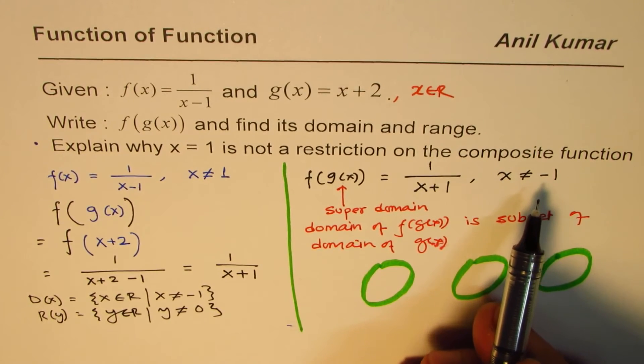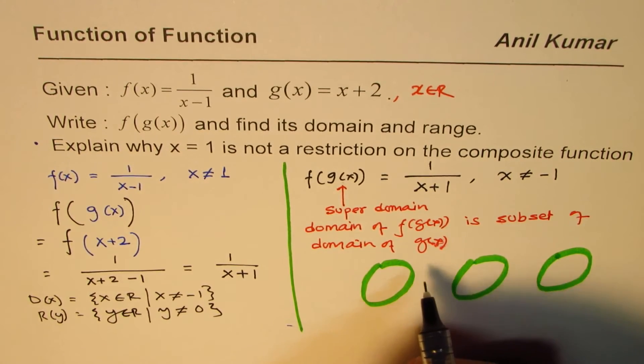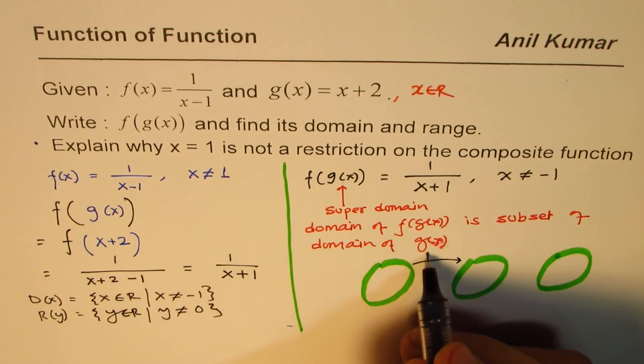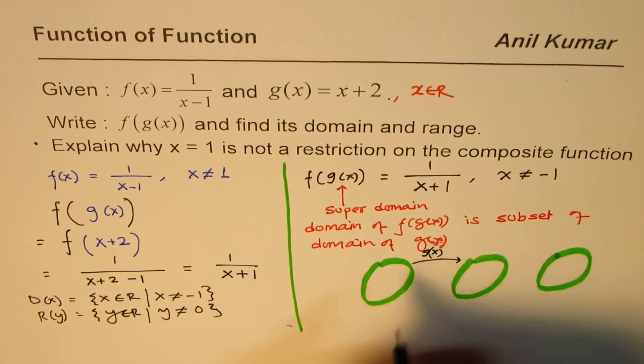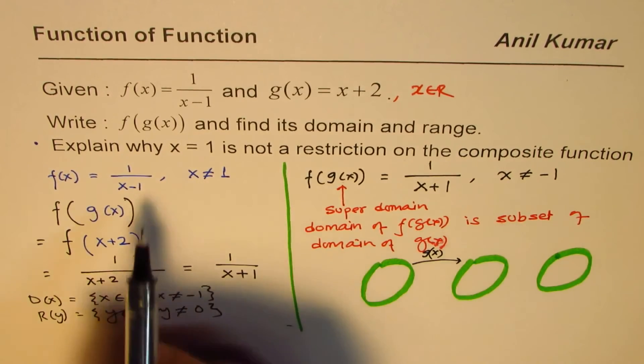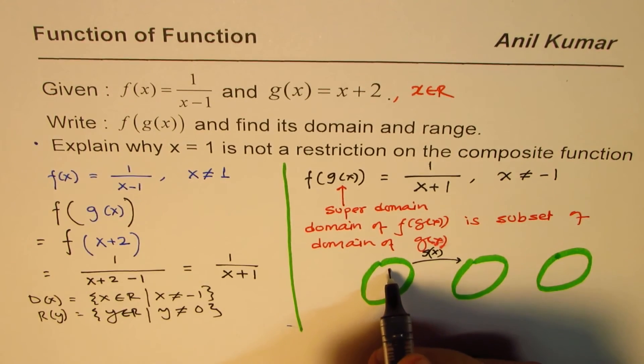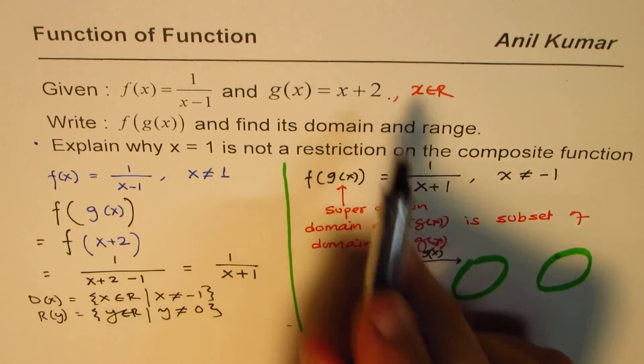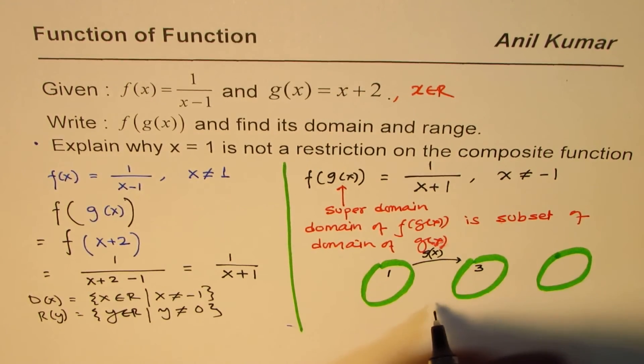The first operation which we perform is the inside function g(x). If I take a point, let me take 1. If I take the point 1, so g(x) is x+2. 1+2 is 3. I get 3 as an output. Do you see that?